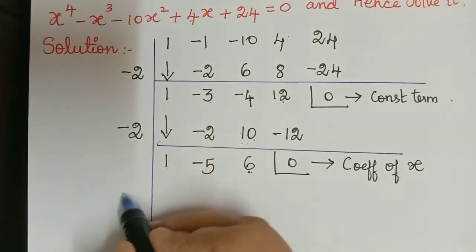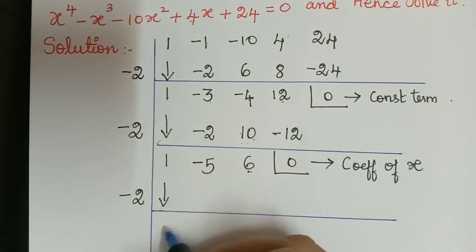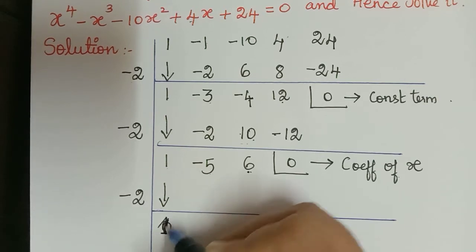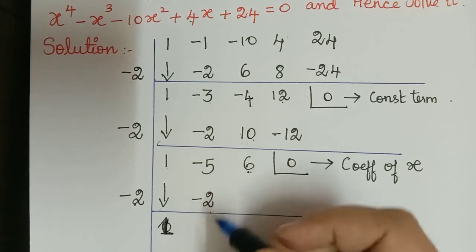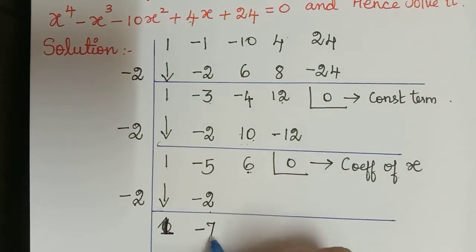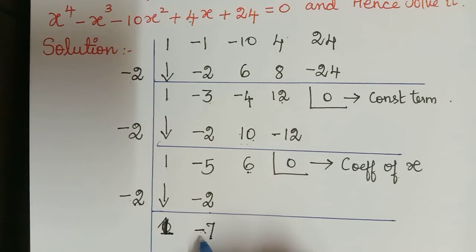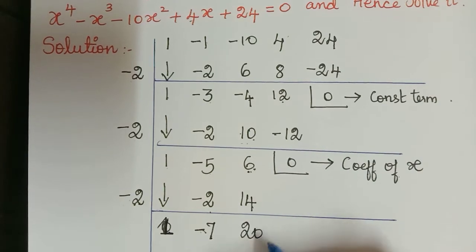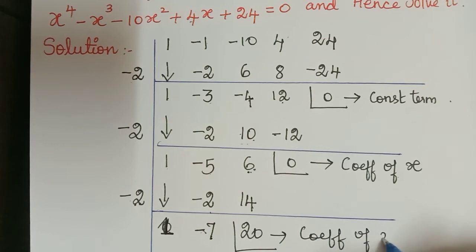Again we perform the division by negative 2. The 1 comes down, multiply with negative 2 to get negative 2, then add these two to get negative 7. Negative 7 multiplied with negative 2: minus into minus is plus, giving positive 14. Adding these two we get 20, which is the coefficient of the x squared term.